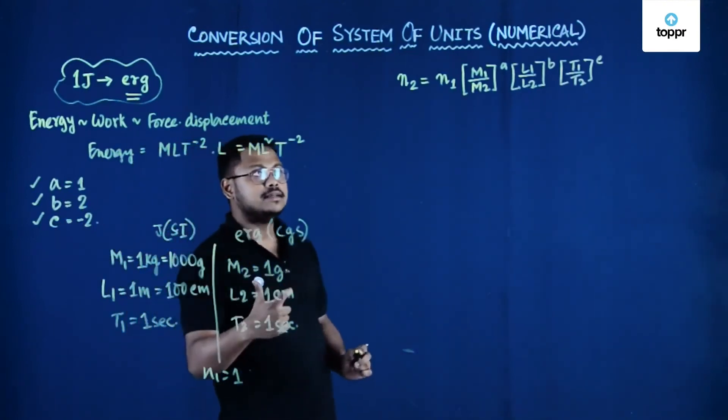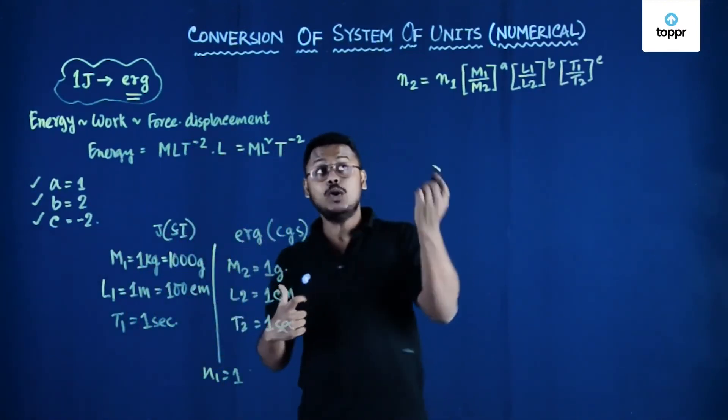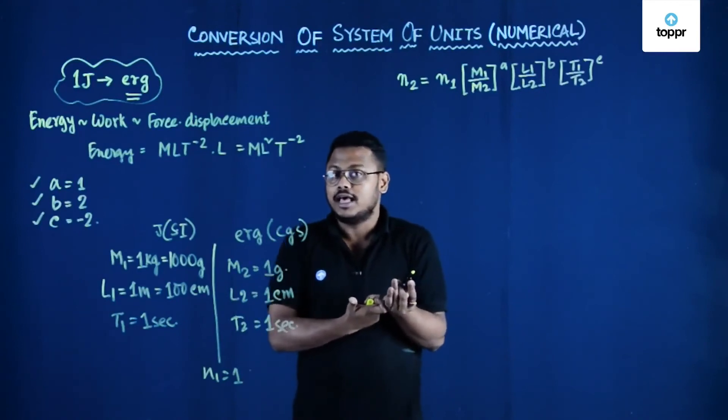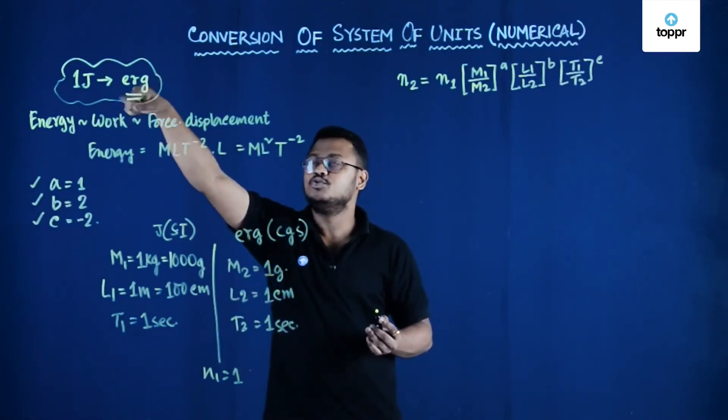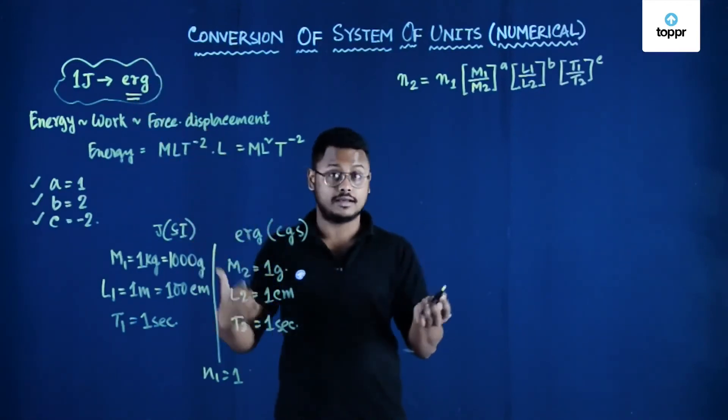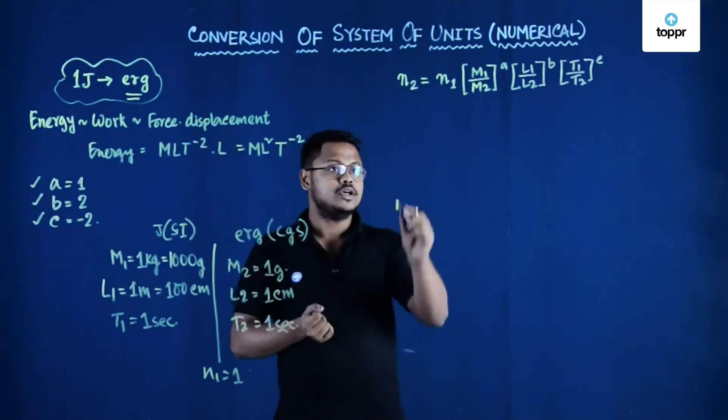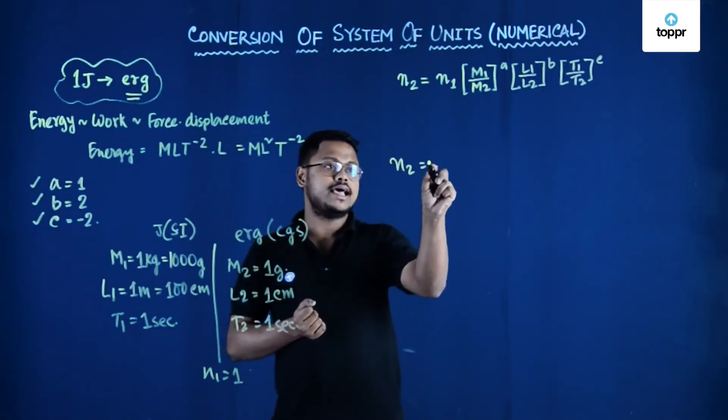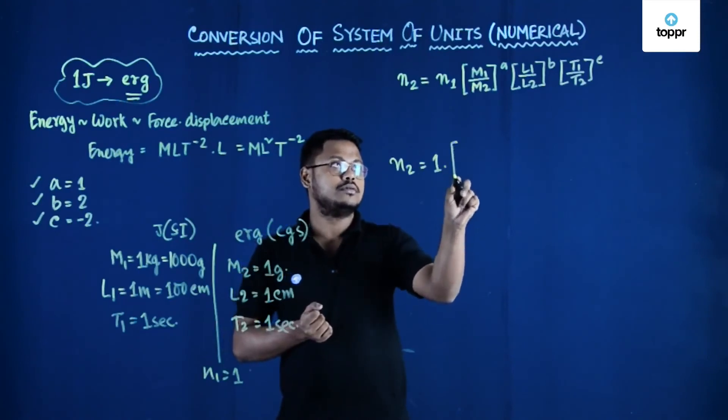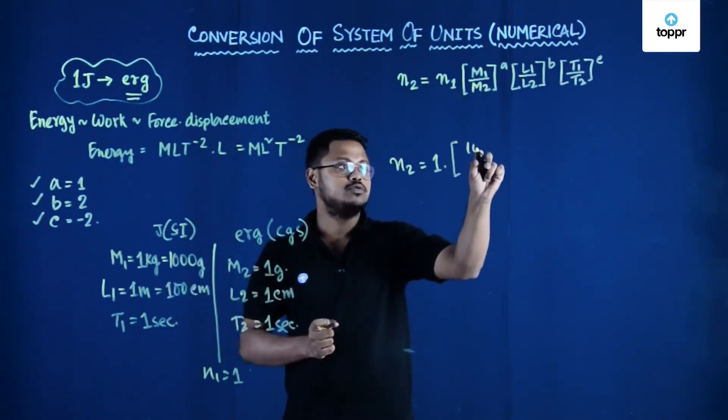Now we will calculate the numerical value in the new system of unit and we will express with this units of measurement that is erg that is in CGS system. So n2 can be written as 1 into m1 upon m2, that is 1000.